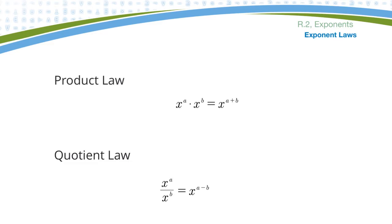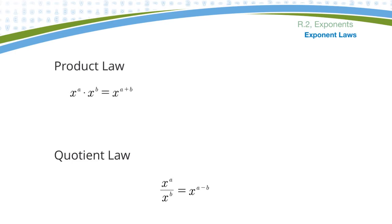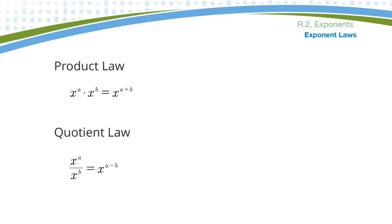We'll look at six exponent laws. The product law says if you're multiplying two expressions together, and if you have the same base, you can simplify by writing one base and then adding the exponents. For example, if I have two to the third times three to the fifth, you can't do anything with that because the bases aren't the same.